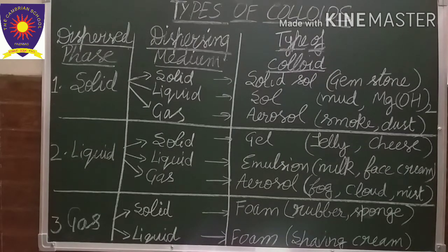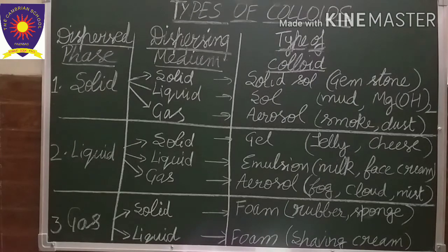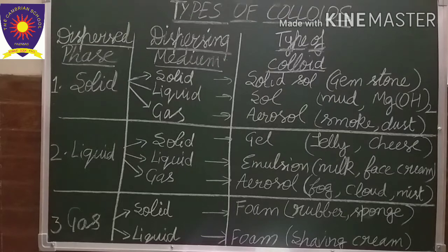Thirdly, when liquid is dispersed in a gaseous medium — where gas is the dispersing medium and liquid is dispersed in it — examples are fog, cloud, and mist. This is also called aerosol. Keep that in mind: when gas is the dispersing medium, whether solid or liquid is dispersed in it, both types of colloids are called aerosol. Only the examples are different, so if you keep the examples in mind you can easily differentiate between both types.